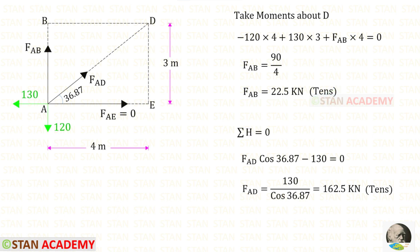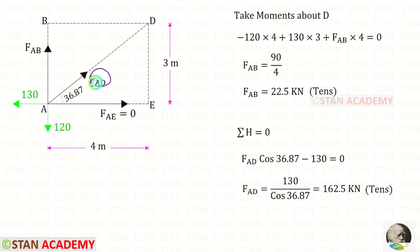Now let us apply Sigma H = 0. 130 is acting towards the left side, so it will be negative. FAD is inclined, so we need to resolve it horizontally using 36.87 degrees. Since FAD is acting towards the right side, it will be positive and we multiply by cos 36.87. For FAD, we will get a positive value — that means it is tensile.